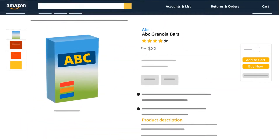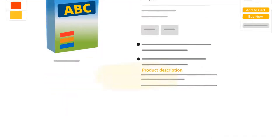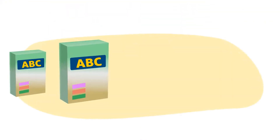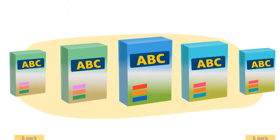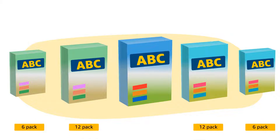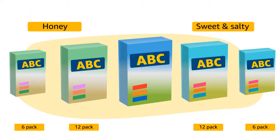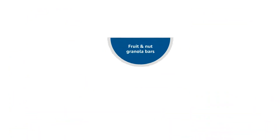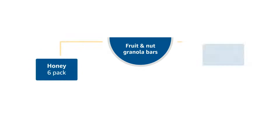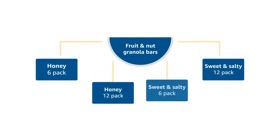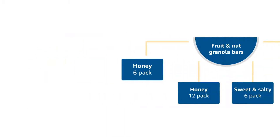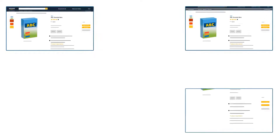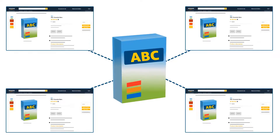Let's take an example of a product with different variations. This product is a box of granola bars available in two sizes — a six-pack and a 12-pack — and two flavors: honey and sweet and salty. Altogether there are four physical product options that can be linked to one Amazon product page. In this example there are four child items mapped to a parent item, held together by the variation theme that is chosen.